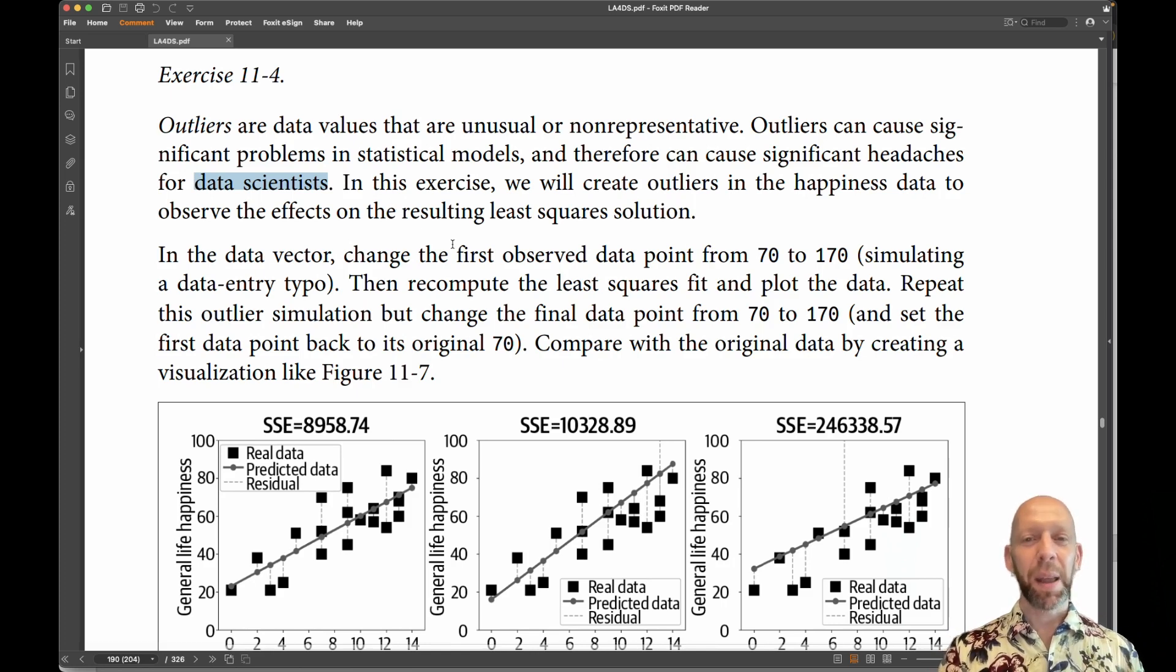What we are going to do here is introduce outliers into this data set, the happiness data set. In particular, you want to change the first data point from 70 to 170, or the last data point from 70 to 170.